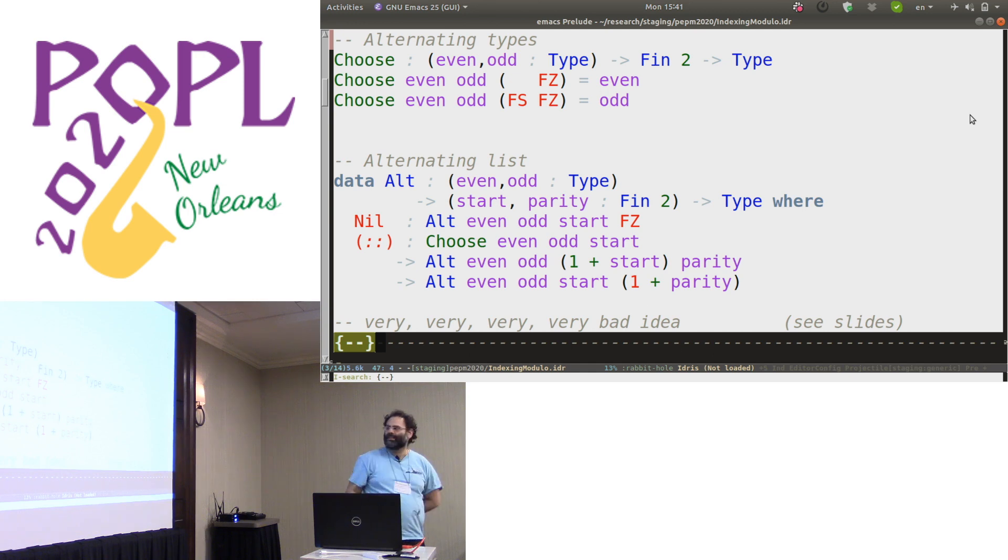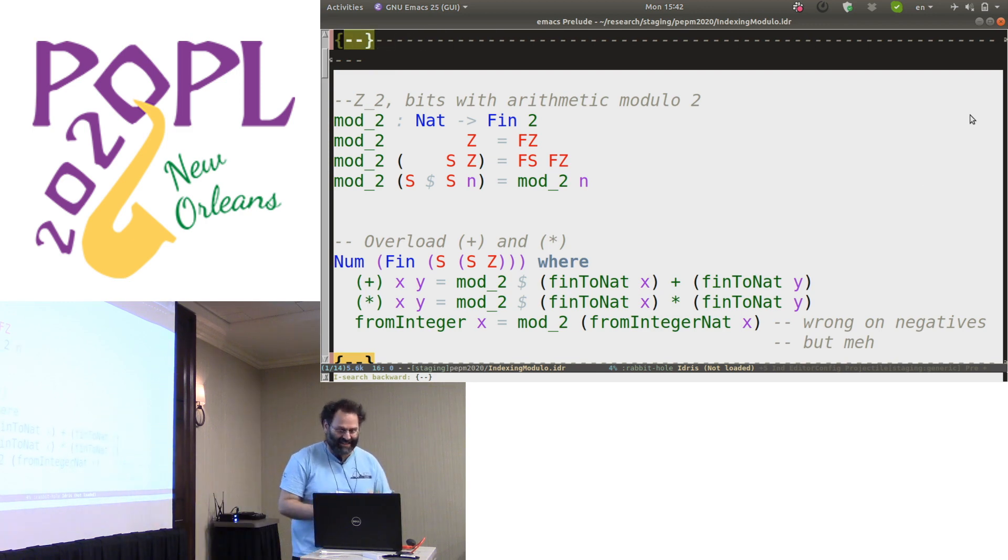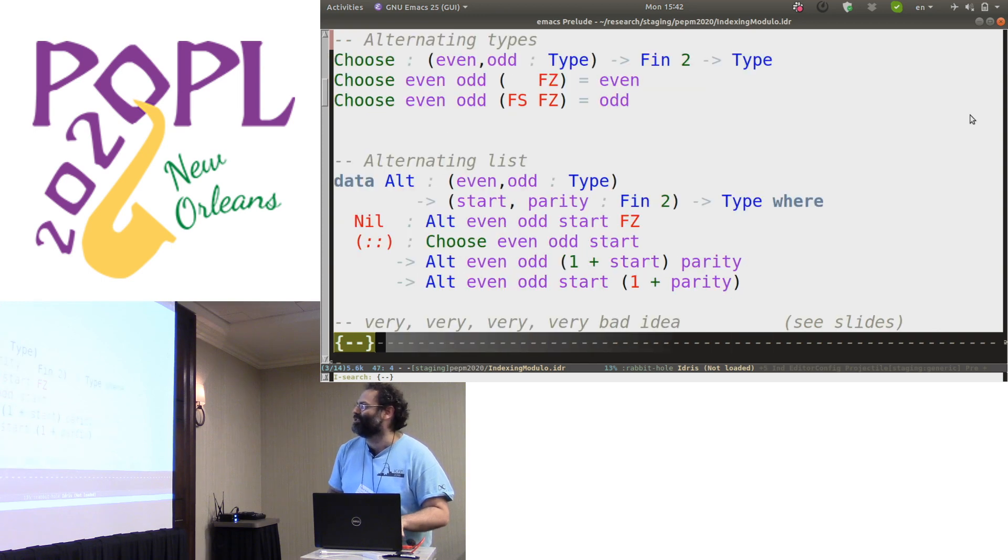Okay, so we're defining this choose function, the choose between types. If it's odd, it takes the odd. If it's even, it takes the even. So it has three arguments, an even type, an odd type, and then a bit. And depending on that bit, it's either the first or the second. And what we're going to use this function to do is to define alternating lists. So these are lists where you alternate between two types. You might start with type that's odd, but then the next one has to be even.